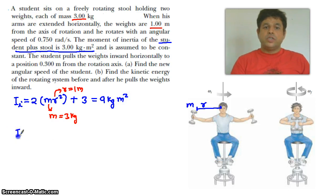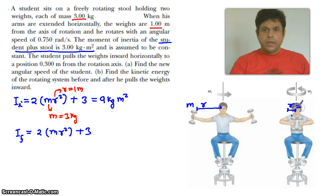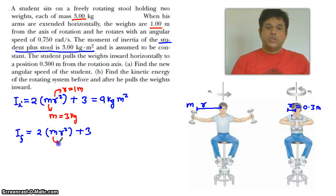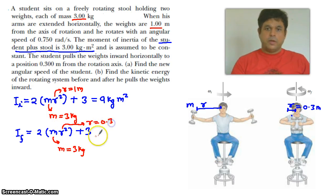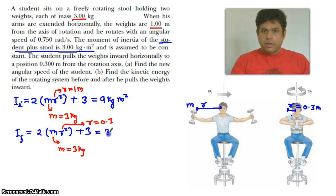Then we find the final moment of inertia. The formula is the same — 2mr² + 3 — but now the value of r is reduced. The new r value is 0.30 m. Substituting m = 3 kg and r = 0.30 m, the final moment of inertia works out to 3.54 kg·m².